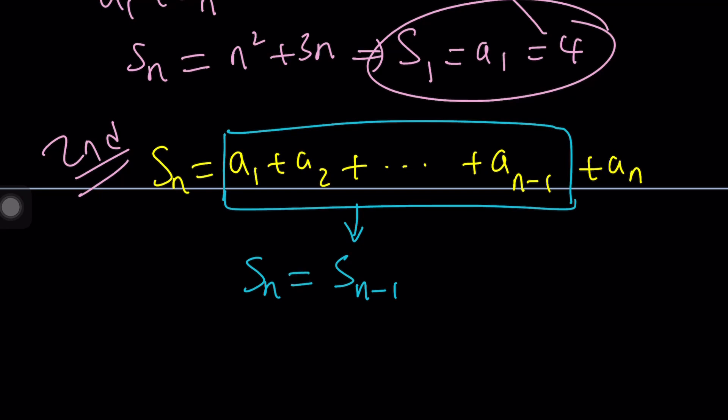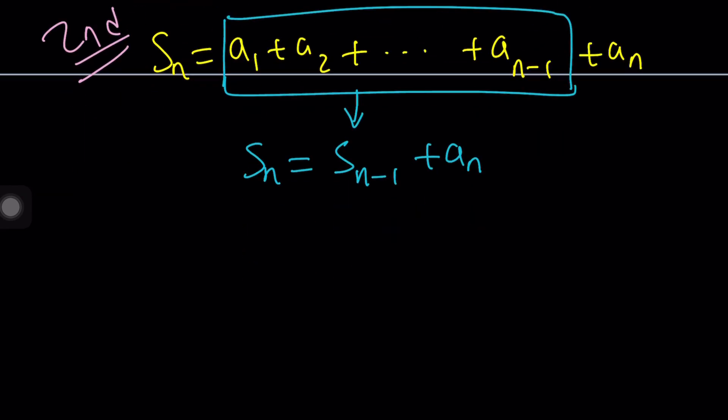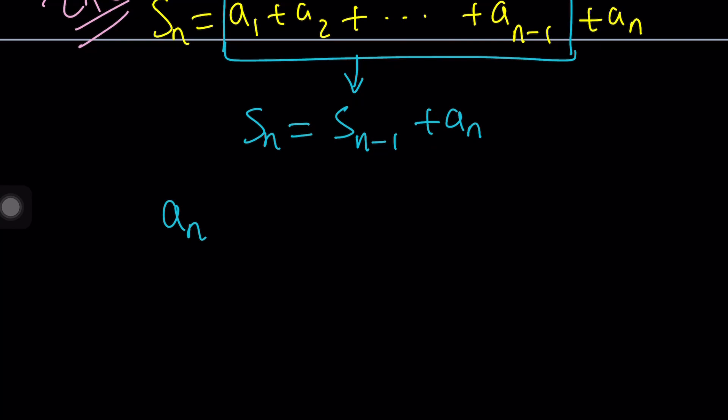s sub n equals s sub n minus 1 plus a sub n. So from here, if you are trying to solve for a sub n, which is this one, you can basically write it as s sub n minus s sub n minus 1. In other words, if you, from the sum of the first n terms, if you subtract the sum of the first n minus 1 terms, you end up with the nth term, which is what we're trying to find. Make sense?